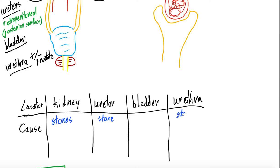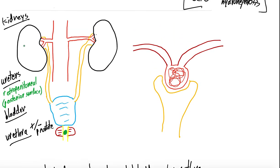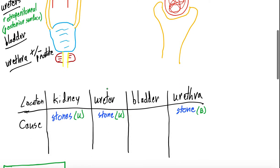A stone can also get lodged in the urethra. The key difference: in the kidney or ureter, it causes unilateral hydronephrosis or partial obstruction — unless you coincidentally have two stones. In the urethra, it's going to be bilateral, because a stone lodged there will cause backflow of urine up into the bladder and then into both kidneys, resulting in bilateral hydronephrosis.